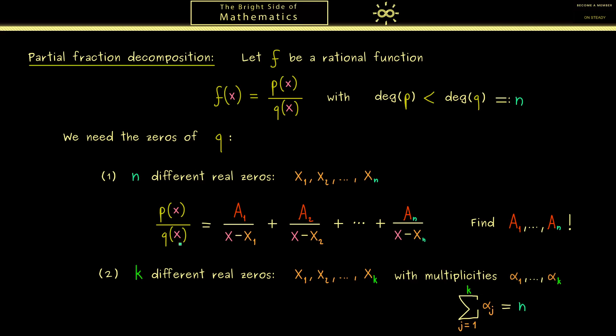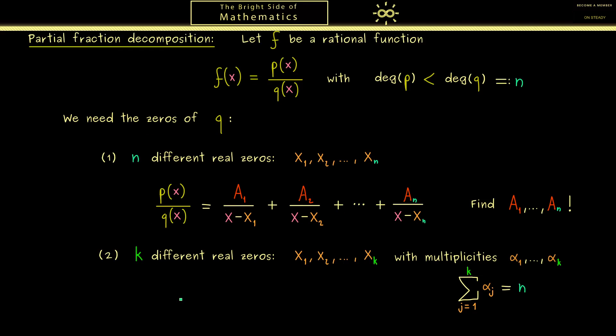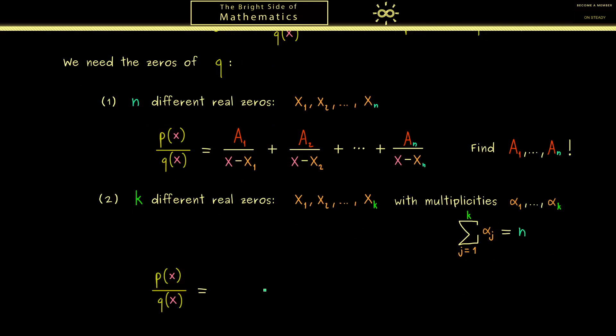Moreover you should see the second case is more general than the first case. And for this reason the formula we get is not so compact anymore. Indeed now this linear factor here occurs exactly as often as the multiplicity tells you. So for the first one we have exactly α₁ terms.